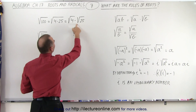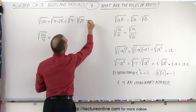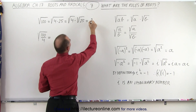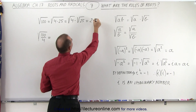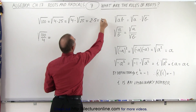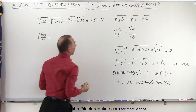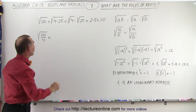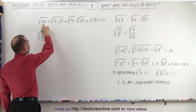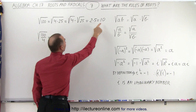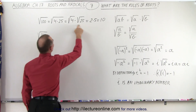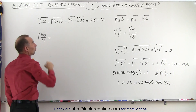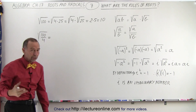And of course we know what these are. This is therefore equal to 2 times 5, which is equal to 10. And of course we already knew that the square root of 100 is indeed equal to 10, which shows that this rule works.